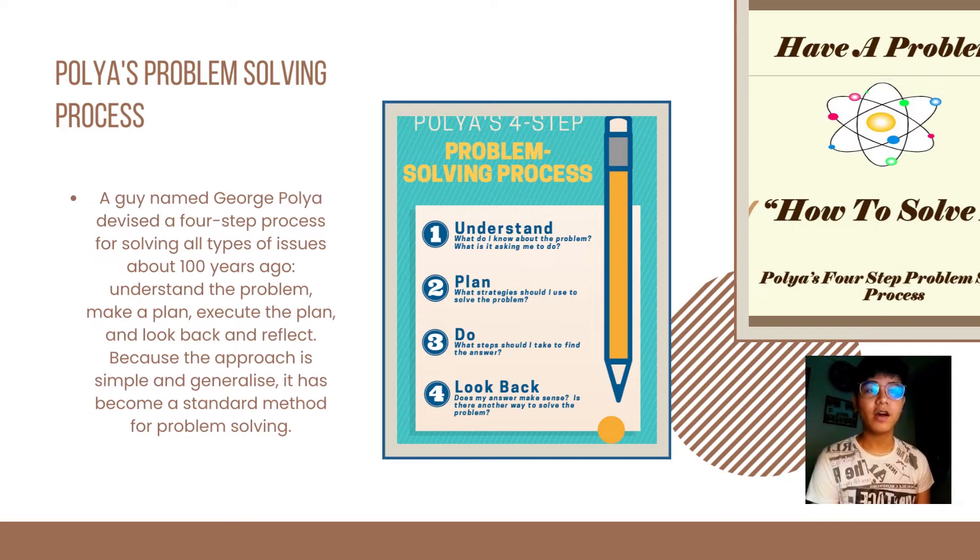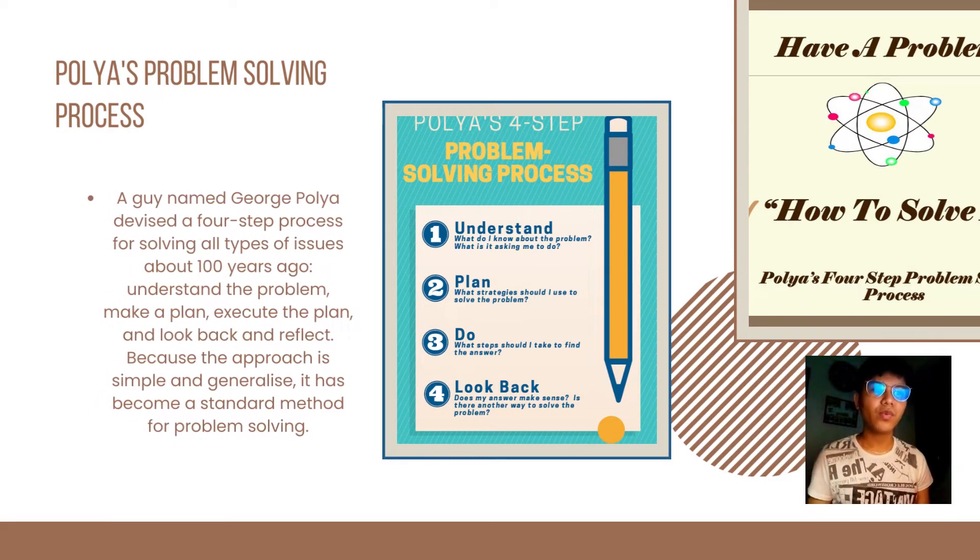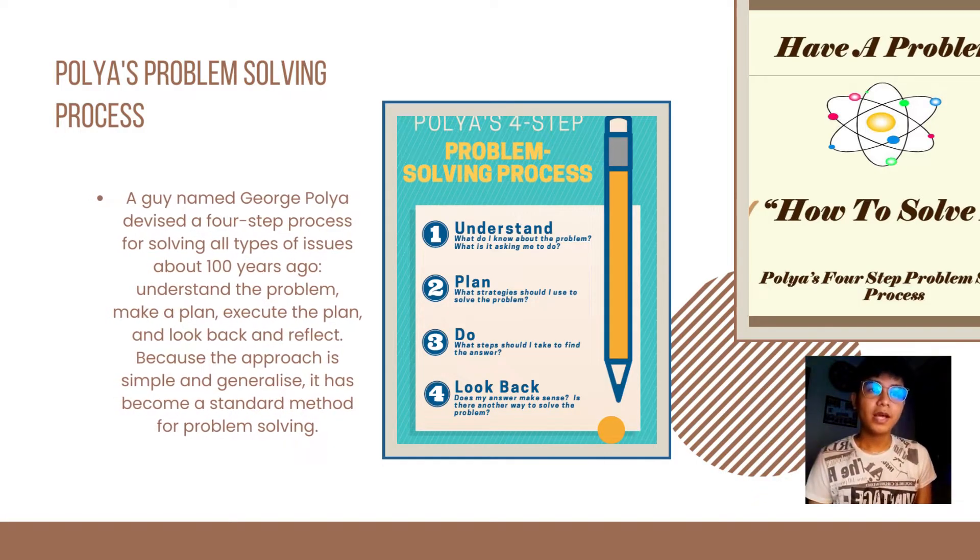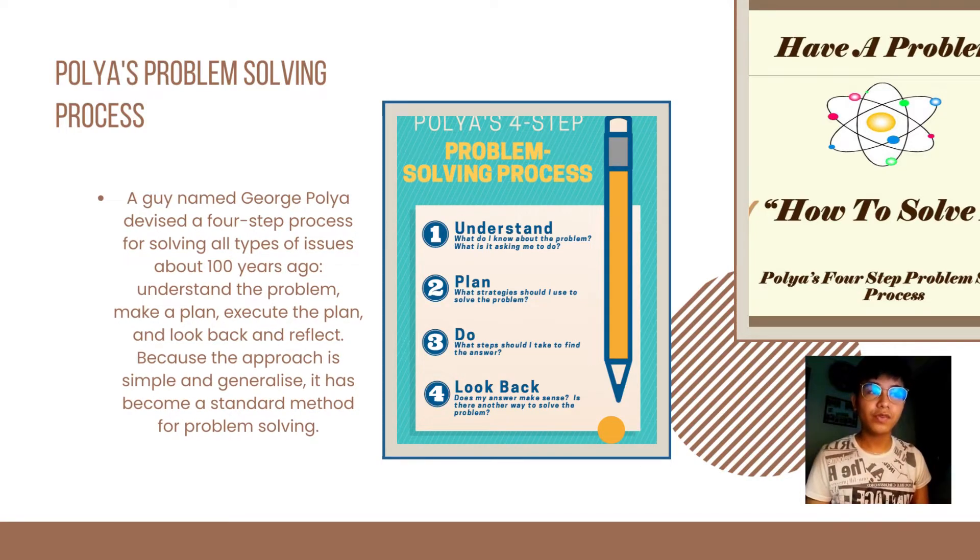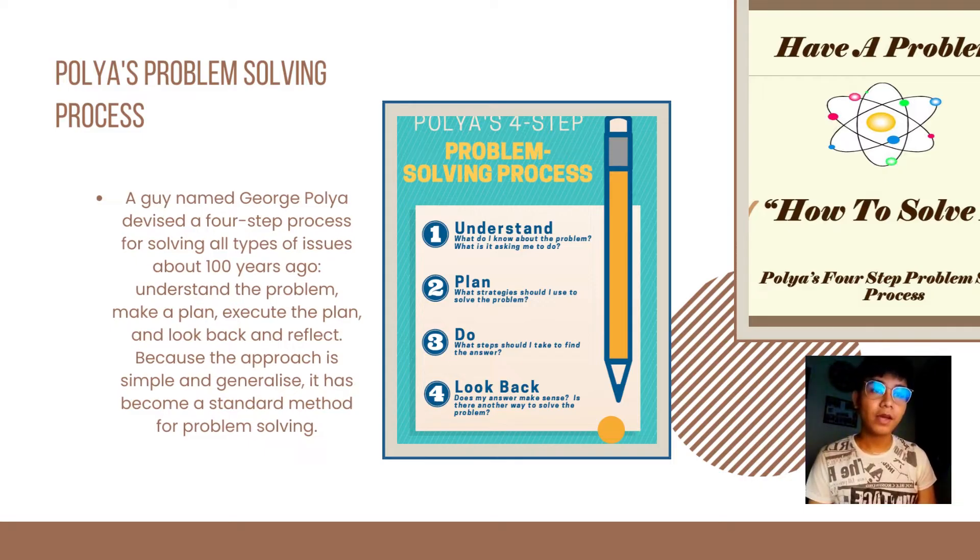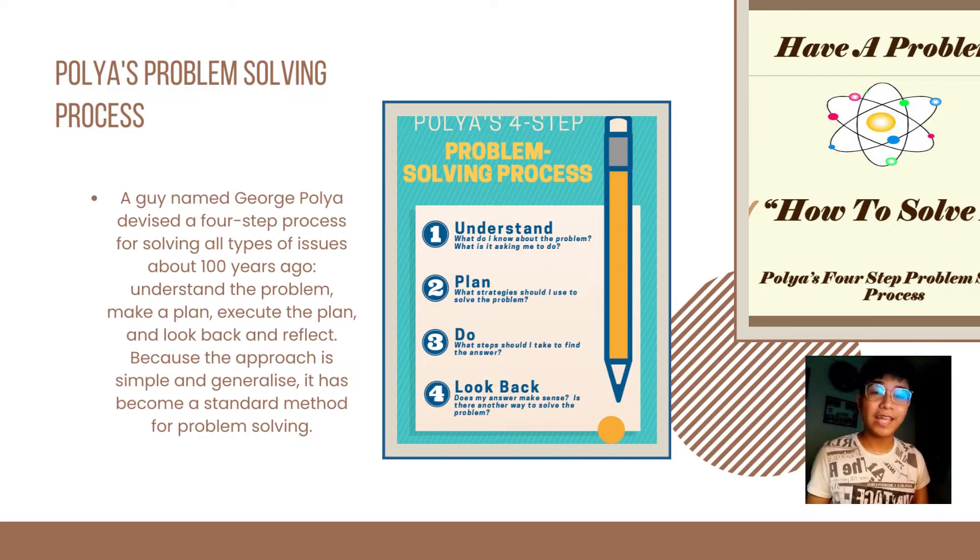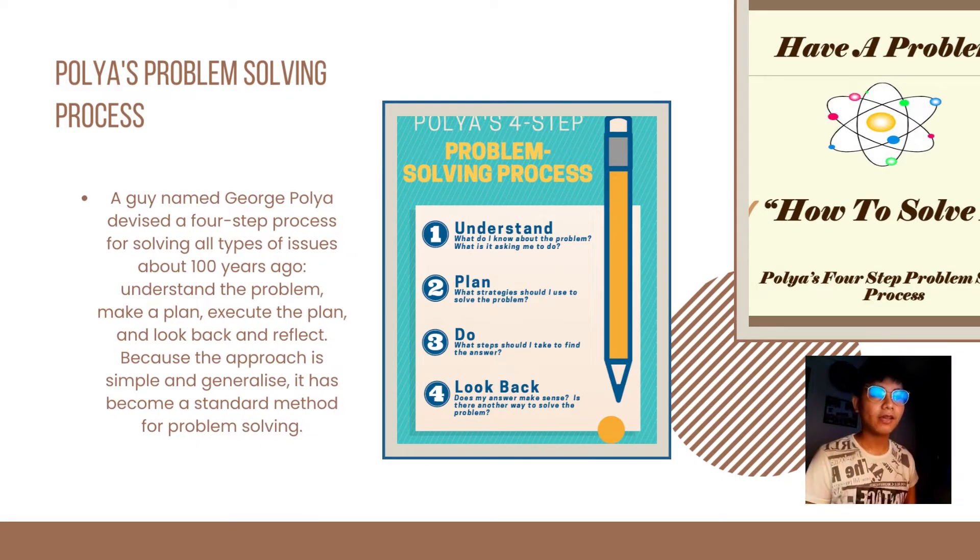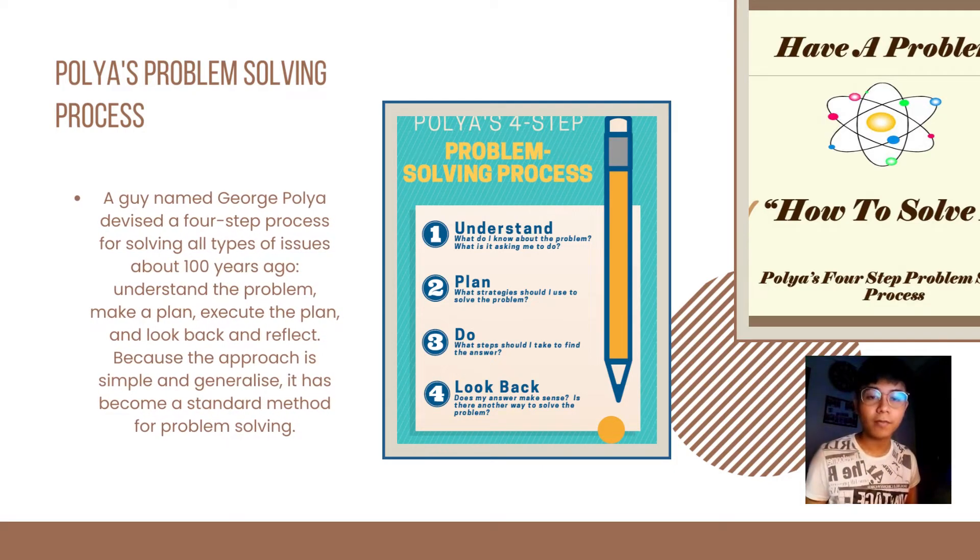Number one is understand the problem. What do I know about the problem and what is it asking me to do? Number two is make a plan. Planning is like strategies to use in solving the problem. Number three is do. What steps should I take to find the answer? Number four is to look back and reflect. Does my answer make sense? Is there another way to solve the problem?